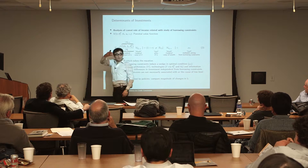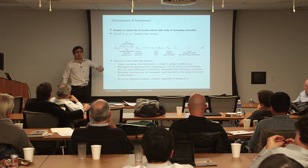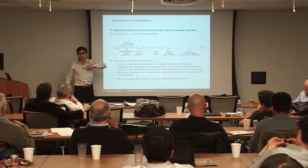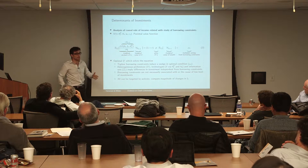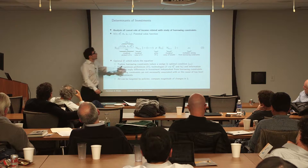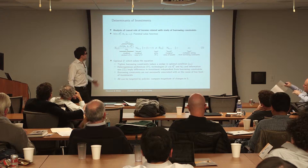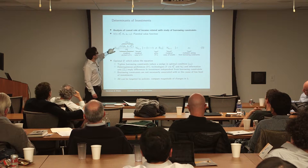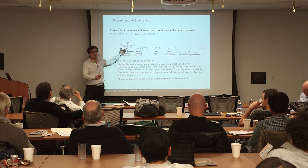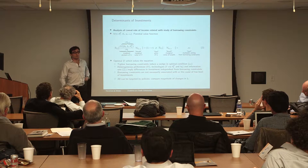Borrowing constraints can be no stricter than the natural borrowing limit — you cannot borrow more than the expected flow of income because you will need to repay with probability one — or they could be stricter if there are formal restrictions to credit markets. The last point is what the expectation is taken over: an information set that could be heterogeneous across families or could represent other forms of uncertainty.